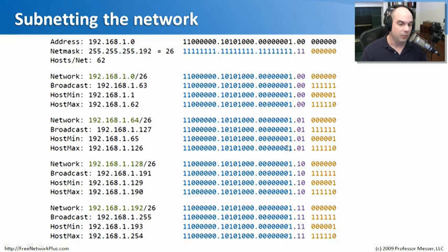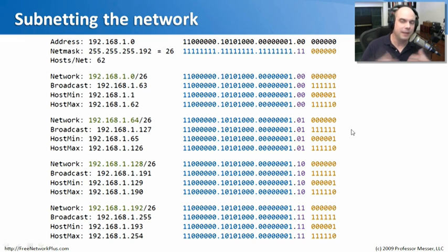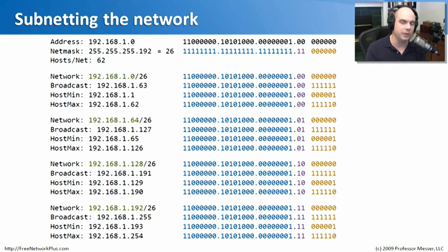To do the next one, we go to the next subnet bit value, which is 01. Once calculated, we take the next binary value 10, and then finally 11. That's how we come up with those four subnets. We perform the same network calculation, the same broadcast calculation, the same host minimum and maximum for each. That's a lot of binary calculations, but we've now determined — based on the IP address and subnet mask — what the four networks are, what the four broadcast addresses are, and what host IP addresses can exist on each of those four networks.